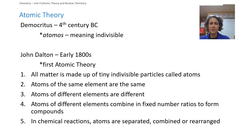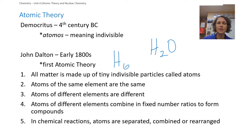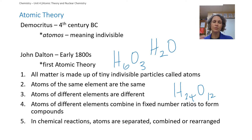Dalton also said atoms of different elements are different, so gold and silver have two different types of atoms. Then he said atoms of different elements combine in fixed number ratios to form compounds. That fixed number ratio aligns with the definition that a substance is uniform in composition — always has to be the same. For example, water is H₂O; H₆O₃ and H₂₄O₁₂ are all water because they share the same ratio. Change the ratio and it's not water anymore. Finally, in reactions, atoms separate, combine, or rearrange — that's how we form different substances.